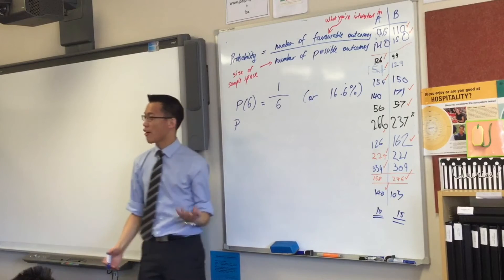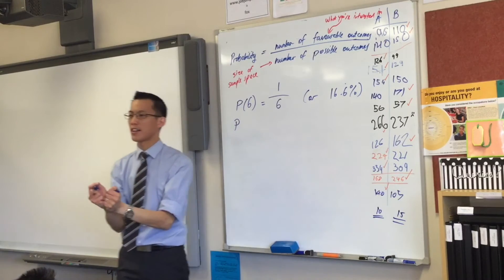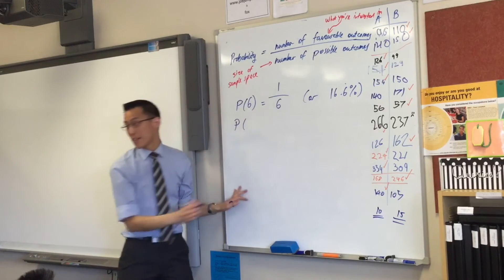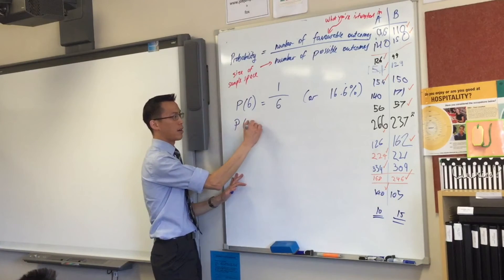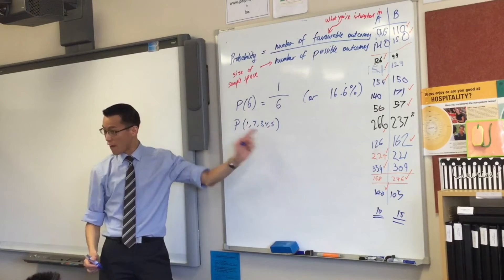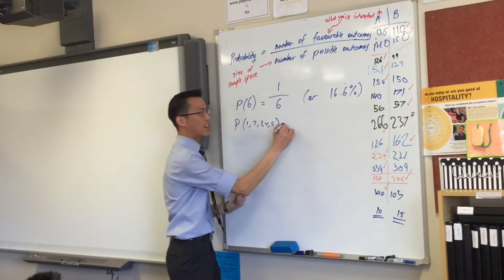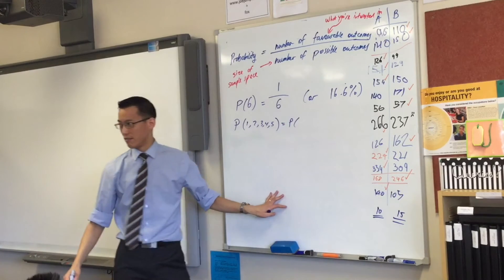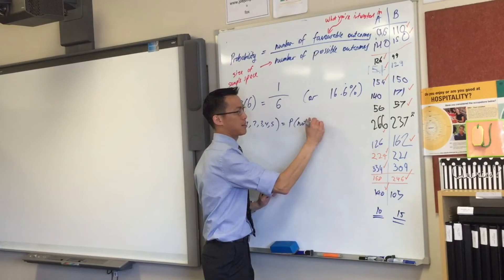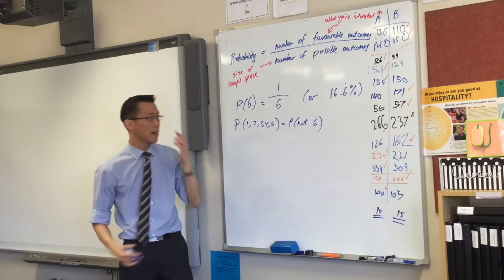Alright, now that was player A, right? What was the favourable outcome that player B was looking for? 1, 2, 3, 4, 5. Okay, good. So, I could write this in a couple of different ways. I could say, 1, 2, 3, 4, 5, right? That's the favourable outcome for player B. I could also just say, not a 6. Anything but a 6, right? So, I can say, not 6. These are the same thing, right?